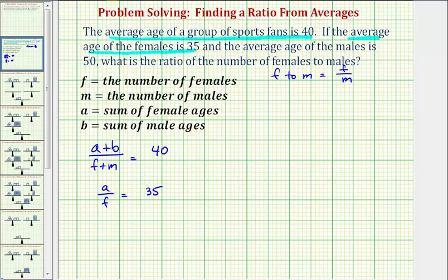And then finally, we're also told the average age of the males is 50, which means the sum of the male ages, which is b, divided by the number of males, which is m, must equal 50.